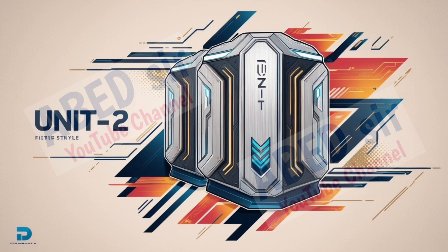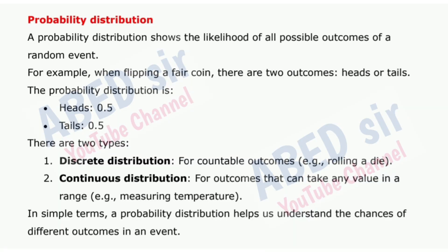Next, second unit. First important question: Probability distribution. A probability distribution shows the likelihood of all possible outcomes of a random event. For example, when flipping a fair coin, there are two outcomes — heads or tails — and the probability distribution is: heads 0.5, tails 0.5. There are two types: 1. Discrete distribution for countable outcomes, such as rolling a die. 2. Continuous distribution for outcomes that can take any value in a range, such as measuring temperature. A probability distribution helps us understand the chances of different outcomes in an event.